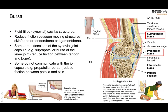Another structure related to joints is the bursa — a fluid-filled sac, like a pillow filled with synovial fluid, located wherever there is friction between a tendon and bone, or bone and skin. Some bursae communicate with the joint cavity. For example, the suprapatellar bursa, located above the patella, communicates with the knee joint and reduces friction between the quadriceps femoris tendon and the femur.